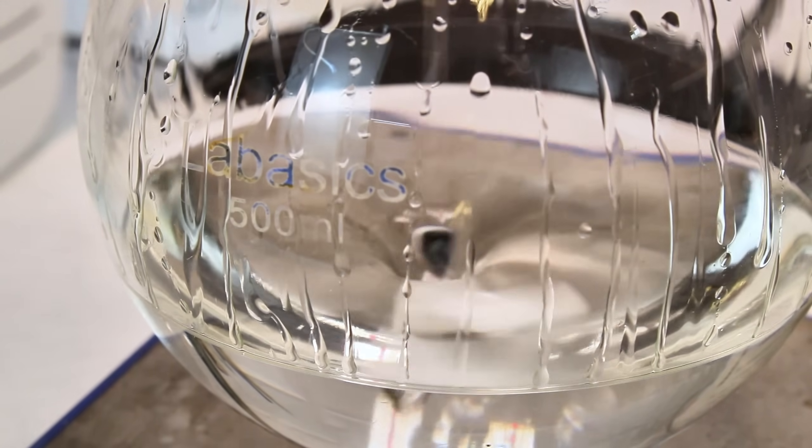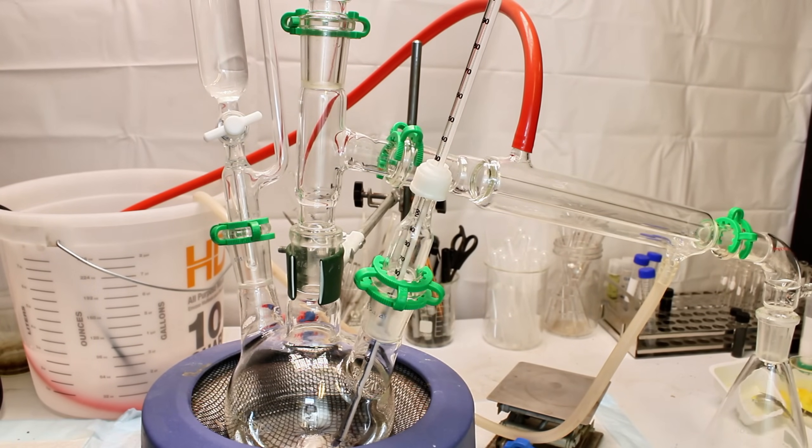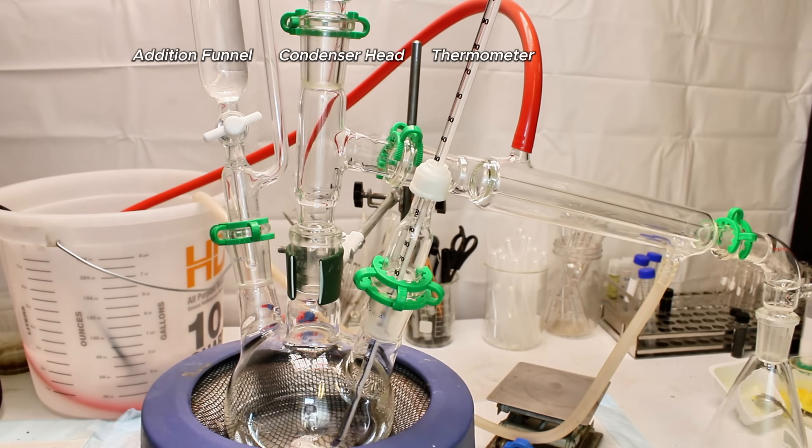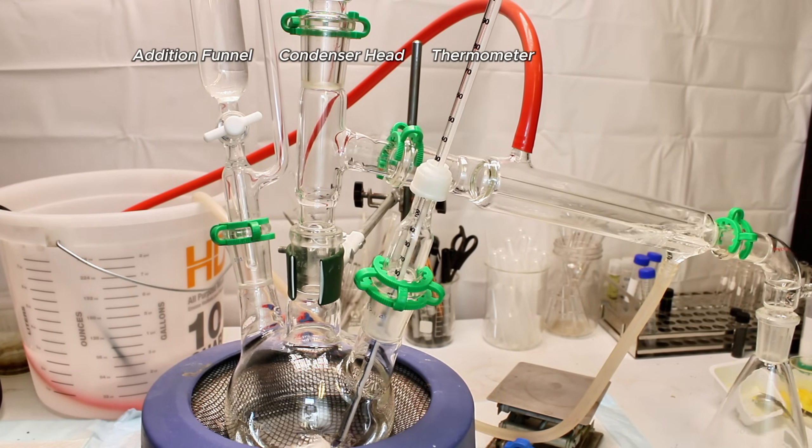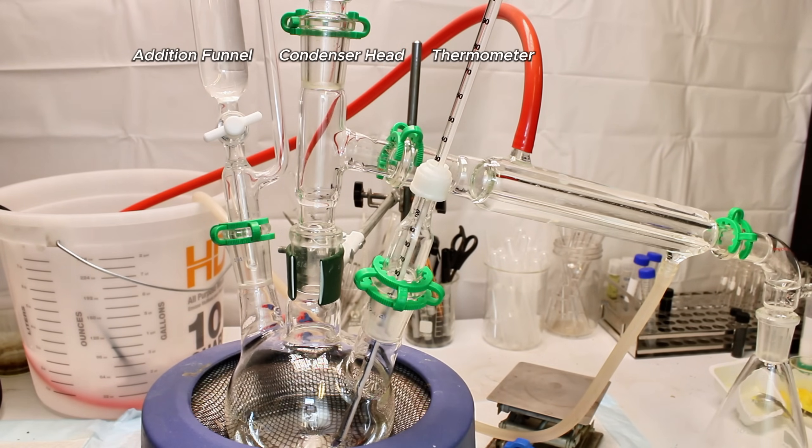Once all the sulfuric acid has been added, I construct a distillation apparatus as shown here. On the center neck, I've connected a simple adapter linked to a Liebig condenser leading into a collection flask, while on the left neck, I've connected an addition funnel, and on the right neck, I've connected a thermometer.